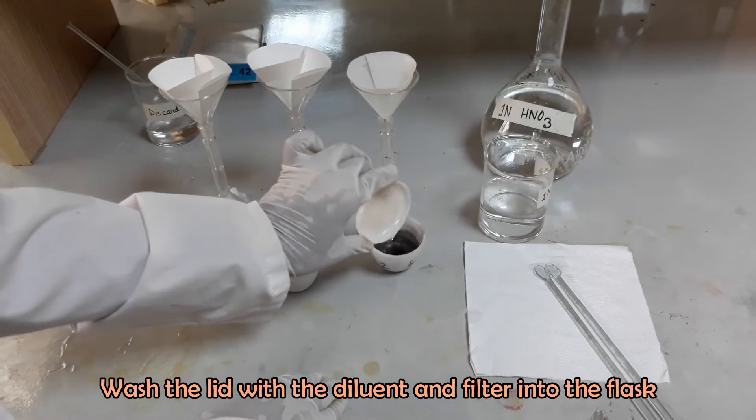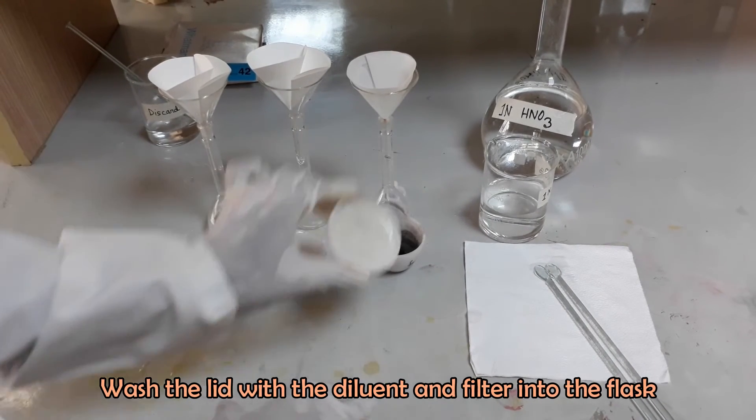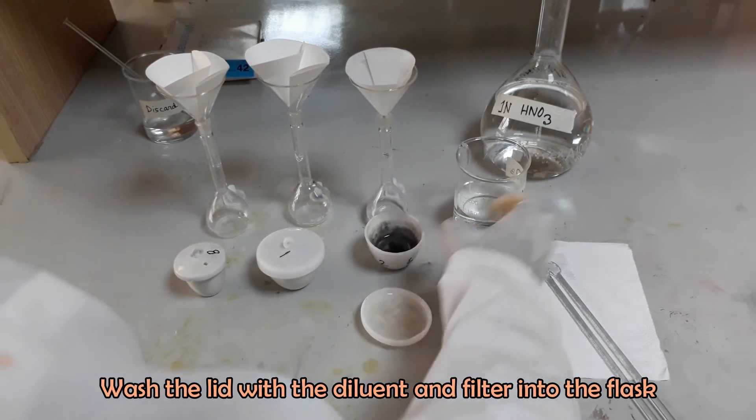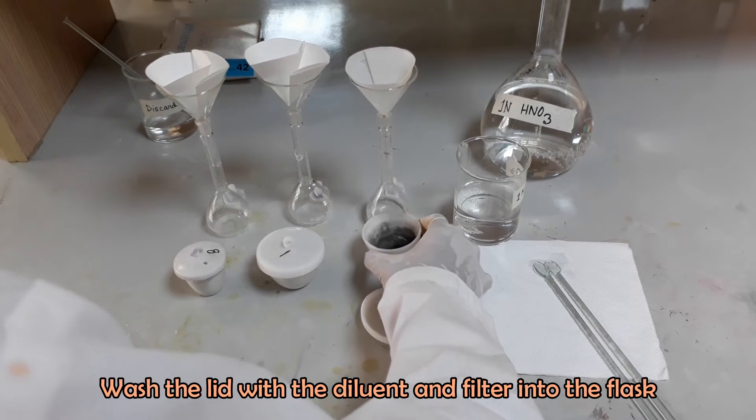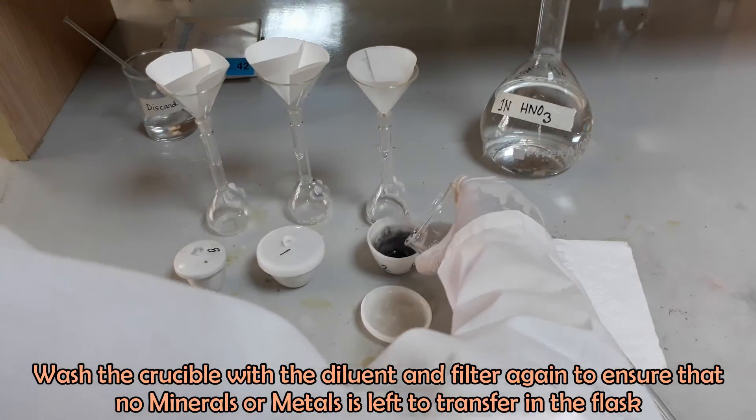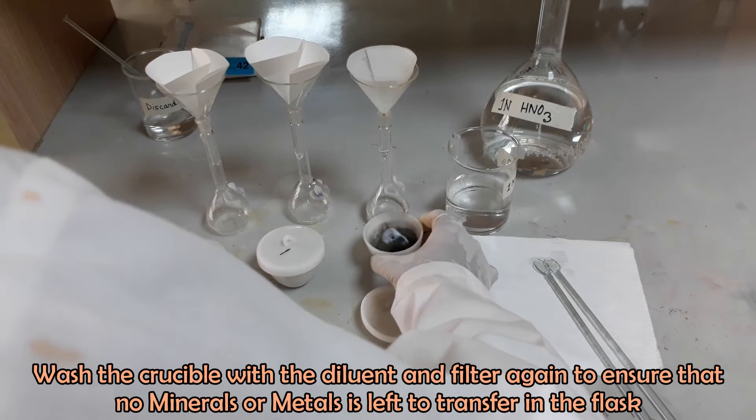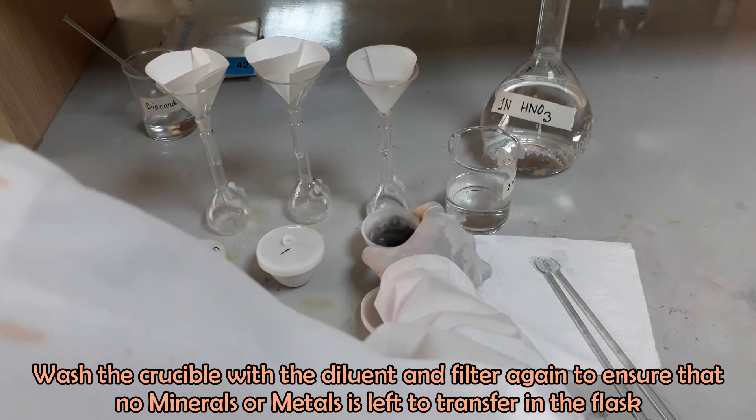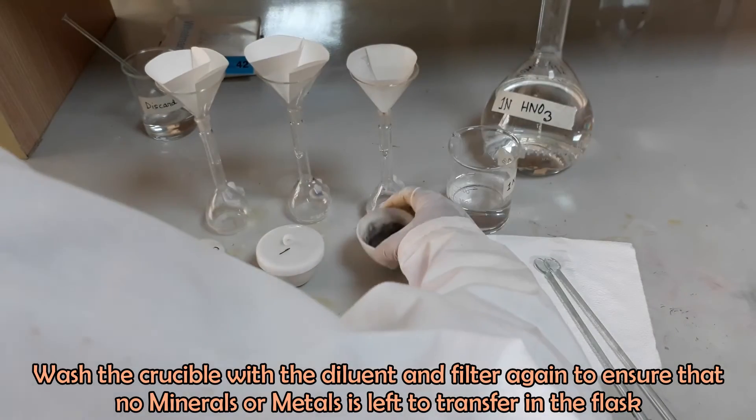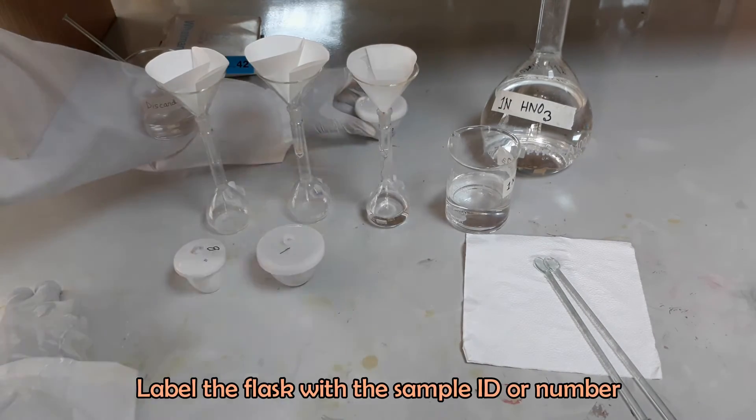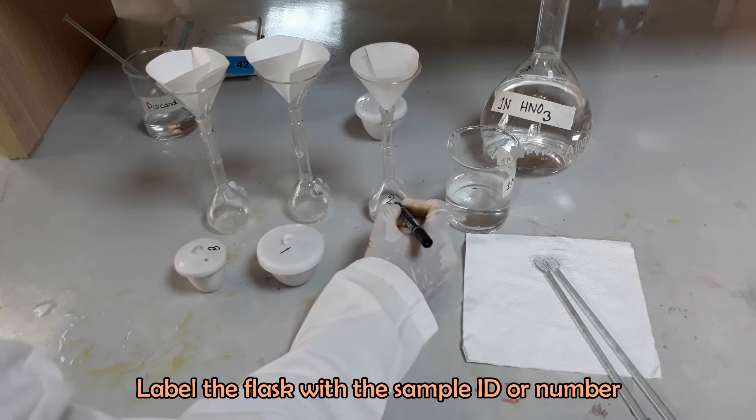Wash the lid with the diluent and filter into the flask. Add the diluent and filter again to ensure that no minerals or metals is left to transfer in the flask. Label the flask with the sample ID.